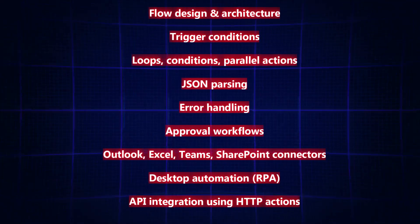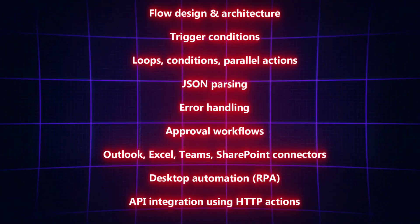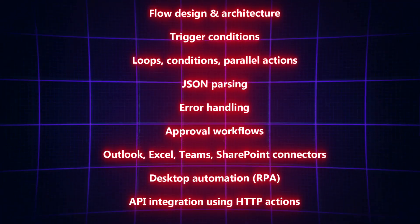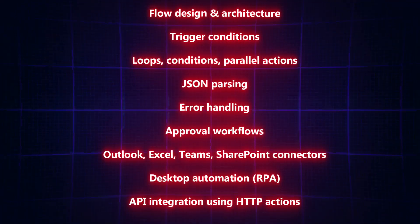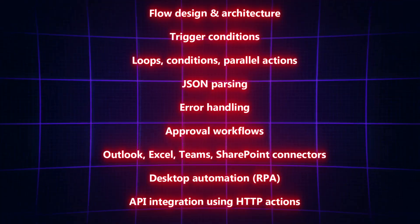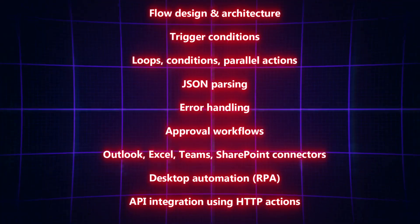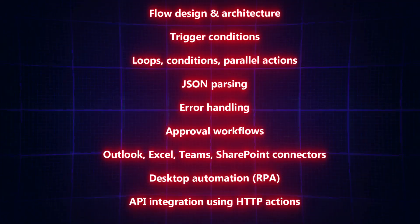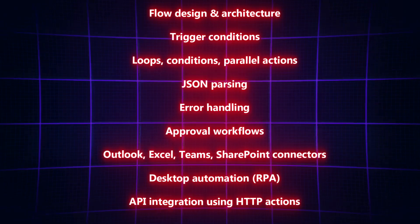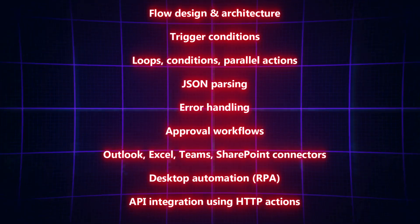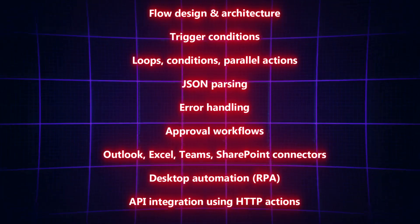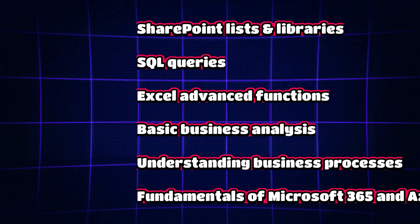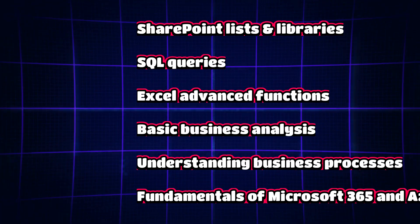For Power Automate skills, you need flow design and architecture, trigger conditions, loops, conditions and switches, JSON parsing, error handling, approval workflows, and connectors for Outlook, Excel, Teams, and SharePoint. Desktop automation and API integration using HTTP actions are also important.